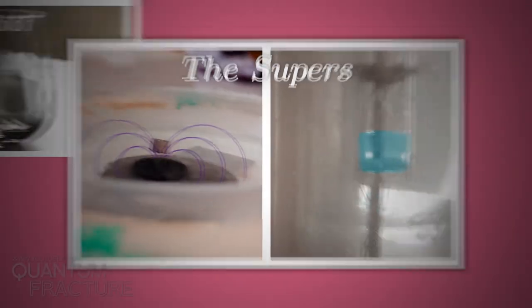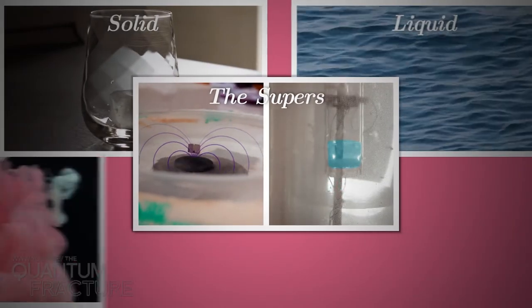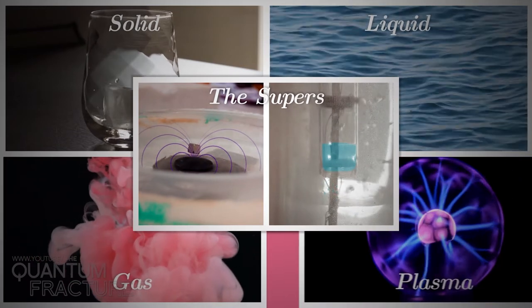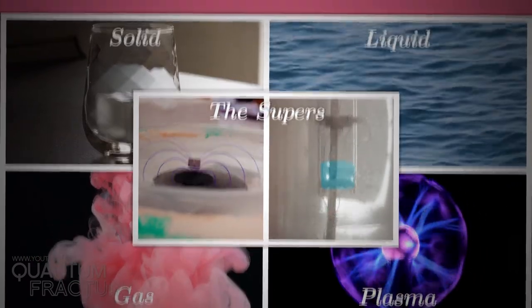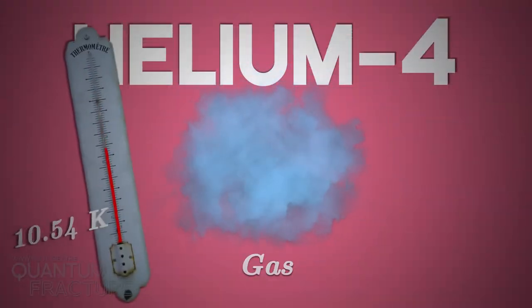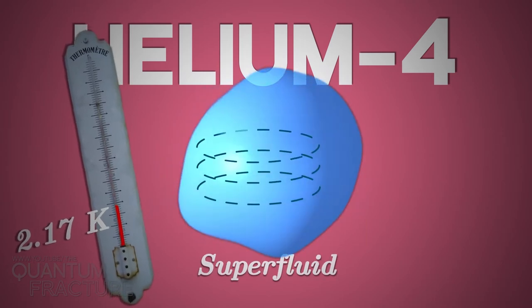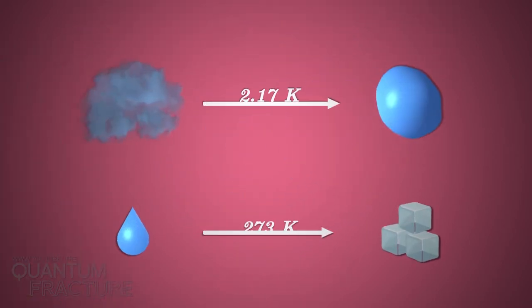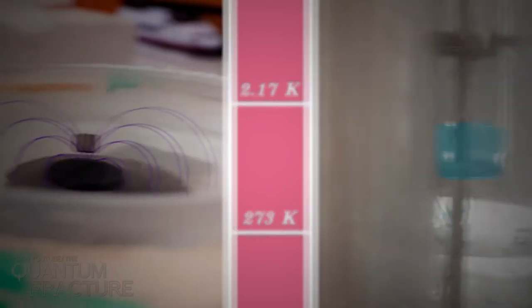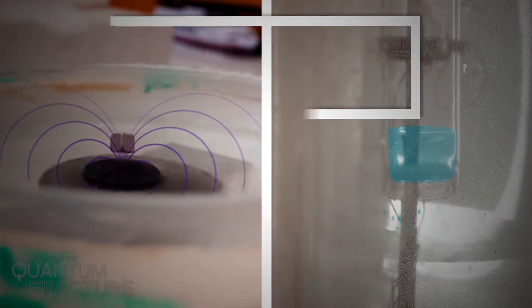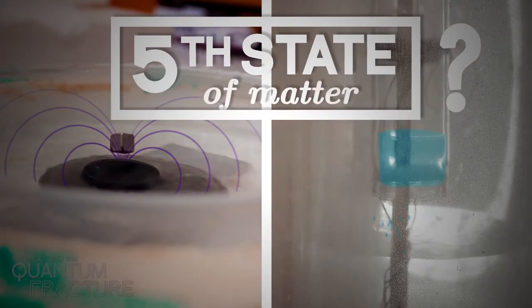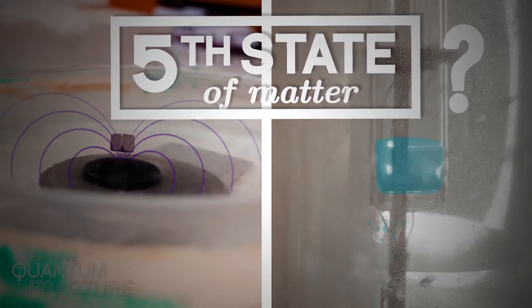Superconductors and superfluids are a fifth state of matter, a quantum state beyond electrifying plasma. Helium, for example, only becomes a superfluid when it reaches a certain temperature like water when it turns to ice. But why are superconductors and superfluids in the same category? They're very different. Shouldn't they have separate categories?